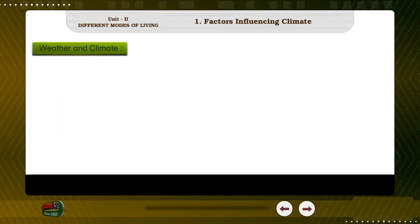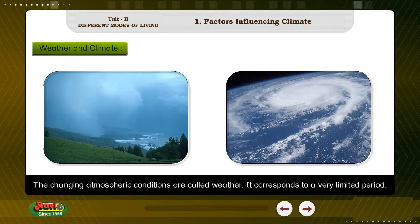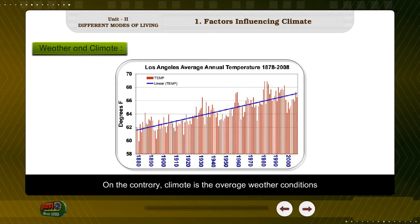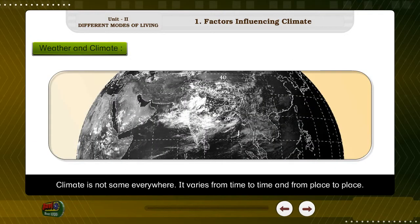Weather and Climate. The atmospheric conditions keep on changing from time to time. The changing atmospheric conditions are called weather, and it corresponds to a very limited period. On the contrary, climate is the average weather condition of a larger area on the Earth's surface for a longer period of time. Climate is not the same everywhere — it varies from time to time and from place to place.